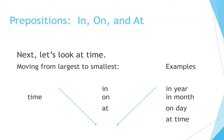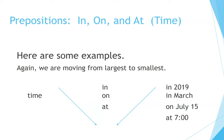Now let's look at time, moving from largest to smallest: in, on, at. In a year, in a month, on a day, at a time. For example: in 2019, in March, on July 15th, at 7 o'clock.